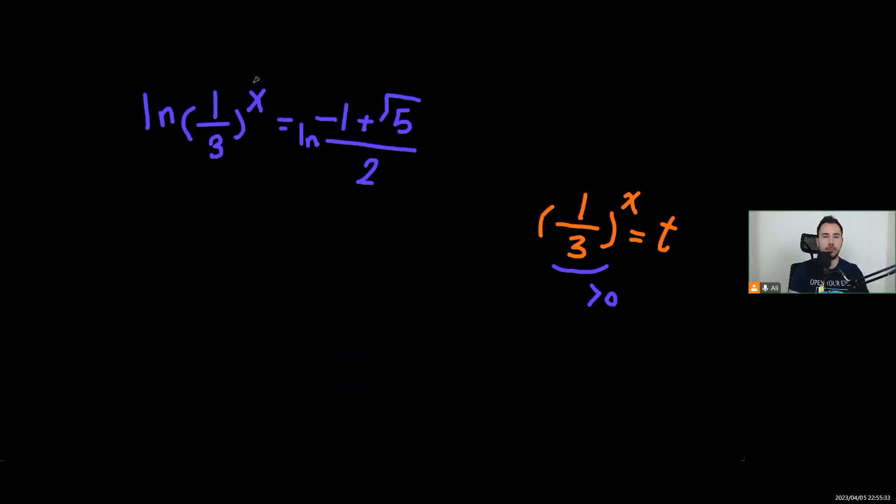Now we know because of logarithms power rule, x could go all the way here. So I will have x multiplied by ln of 1 over 3 equals ln of negative 1 plus square root of 5 over 2.